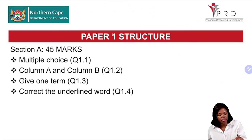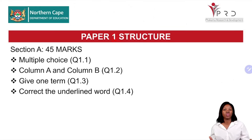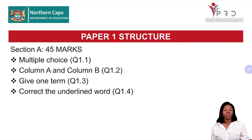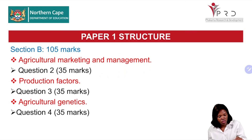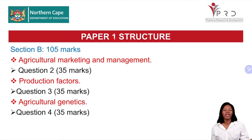Let's look at our Paper 2 structure. Paper 2 has Section A and Section B. Section A has multiple choice questions, Column A and B, and give-one-term questions — Section A is out of 45 marks with short questions. Section B has 115 marks and contains three questions: Question 2, Question 3, and Question 4, each carrying 35 marks.